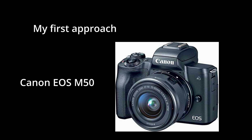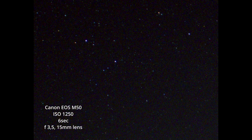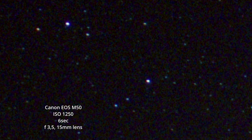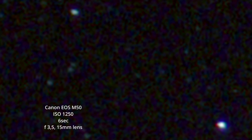During the first approach to image this object, I used my Canon EOS M50, a very cheap and unmodified DSLR camera using a kit lens, and I produced this image. And if you zoom in, you can see some faint object in the middle here — and this is M57 indeed.